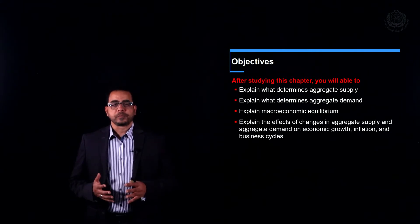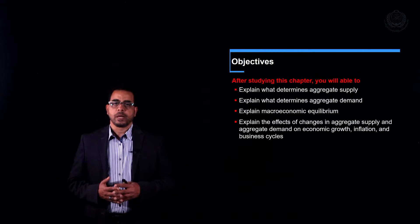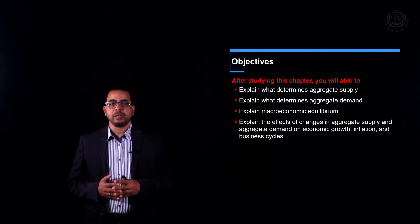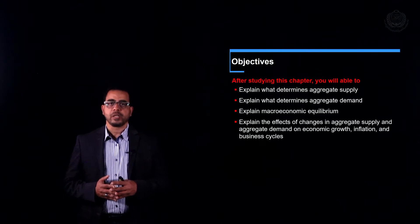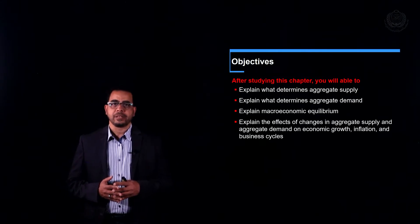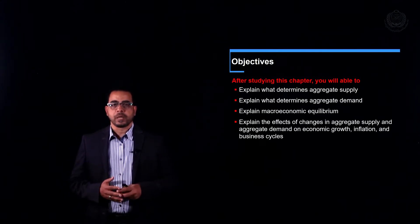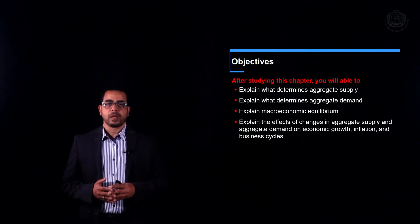Through studying aggregate demand and aggregate supply, we'll talk about how this model explains economic phenomena like inflation and recession. Let's start by talking about the aggregate supply.